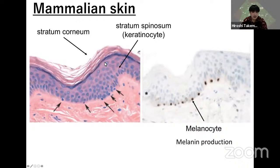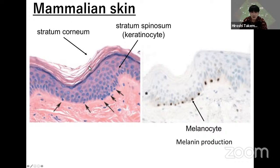This is mammalian skin. Mammalian skin has a lot of cells, mainly stratum corneum and stratum spinosum. These layers contain keratinocytes — here is a dead keratinocyte and a living keratinocyte. Melanocytes sit just on the basement membrane, produce melanin, and transfer it to keratinocytes to protect against UV light.